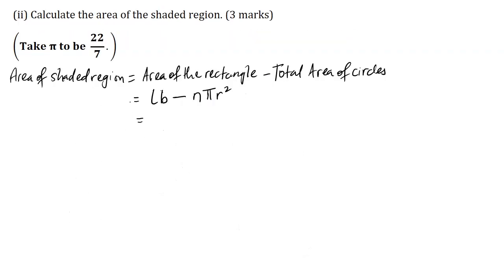We found in part 1 the area of the rectangle. So we substitute 2,352 minus 12. They told us to take π as 22 over 7, and the radius is 7, so this is 7 squared.